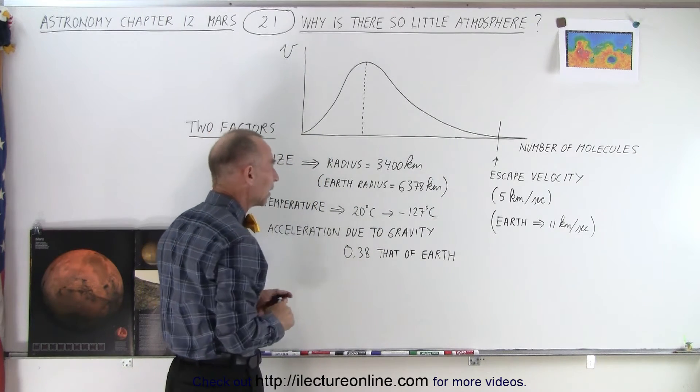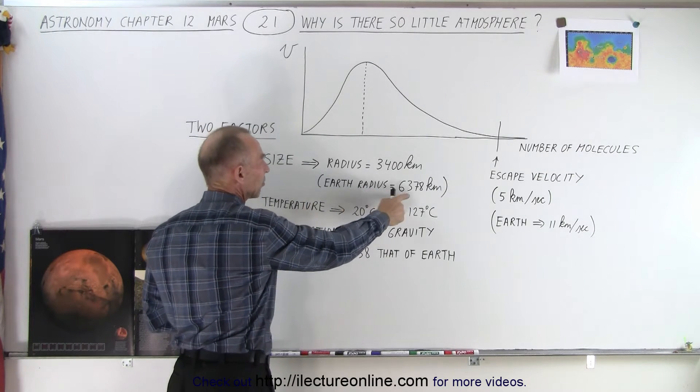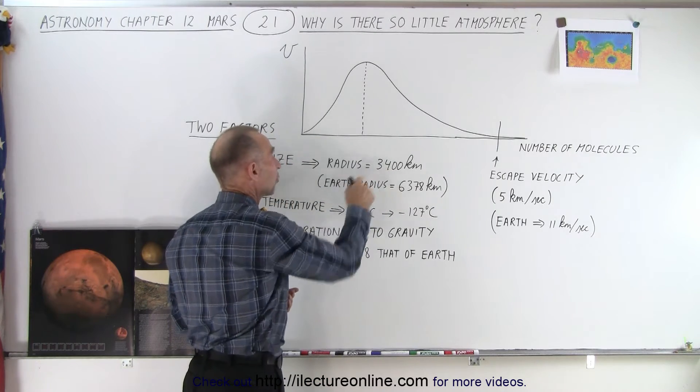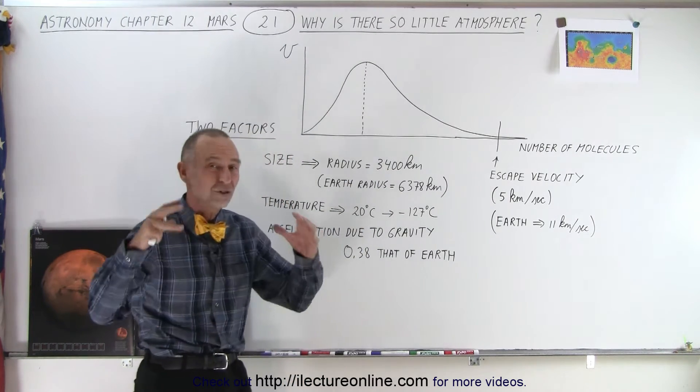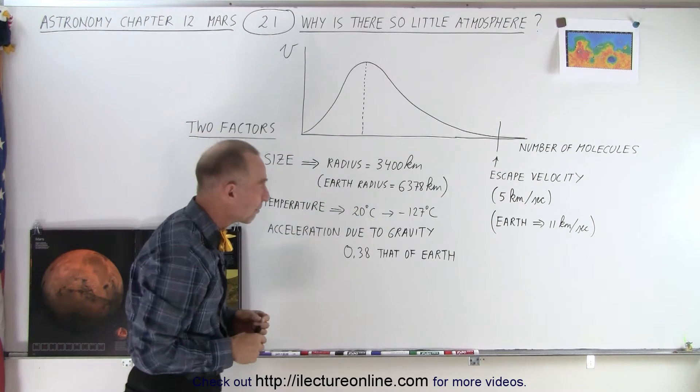The size of the planet, of course, is important. The bigger the planet, the more mass it has. The Earth's radius is 6,378 kilometers, as opposed to the radius of Mars, which is only 3,400 kilometers. Smaller planet means smaller gravitational force and less escape velocity, typically.